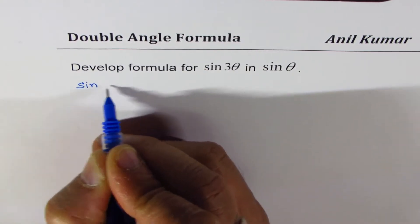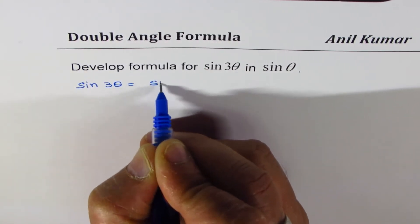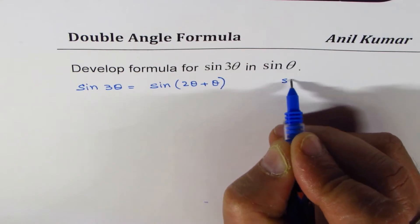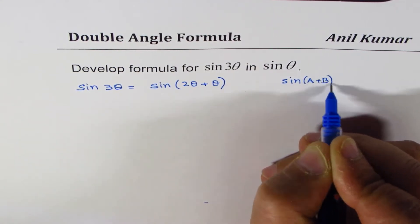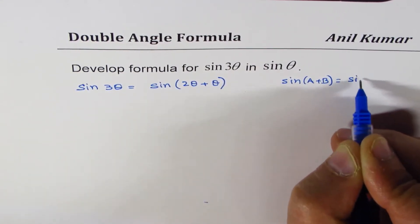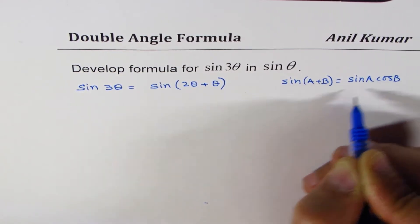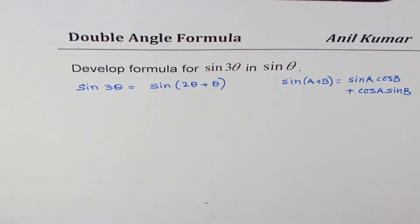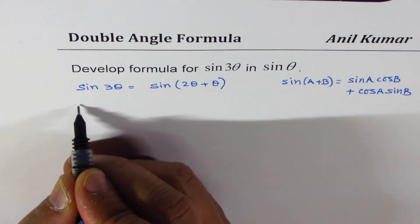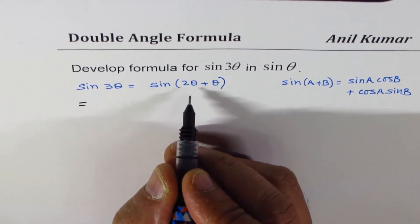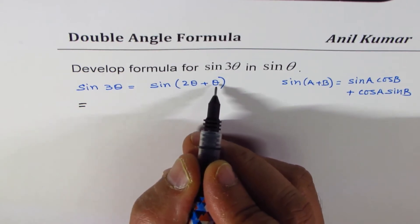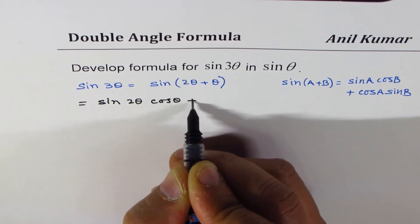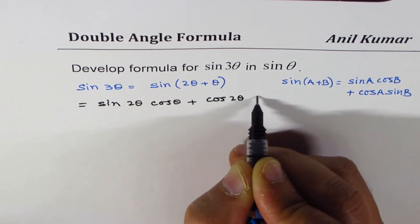So I could write sin 3 theta as equals to sin of 2 theta plus theta. We will use the formula sin A plus B equals to sin A cos B plus cos A sin B. So sin 3 theta could now be written with a as 2 theta and b as theta.